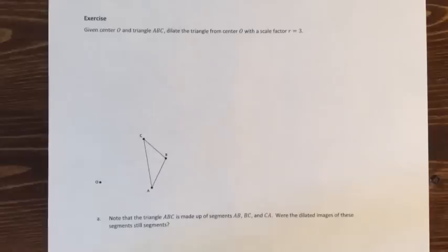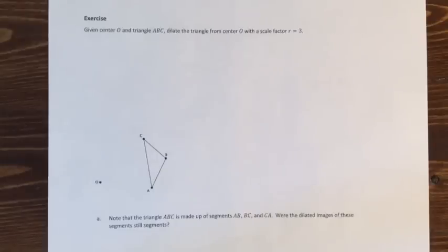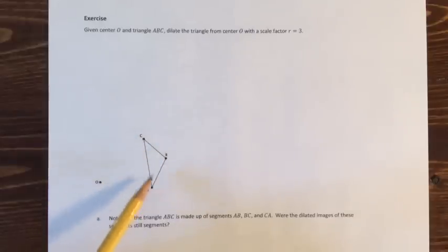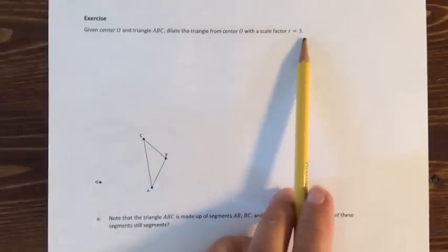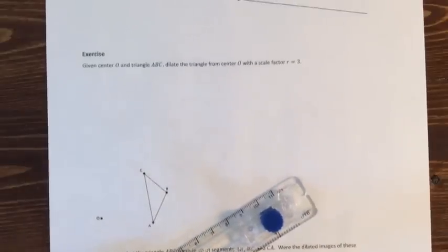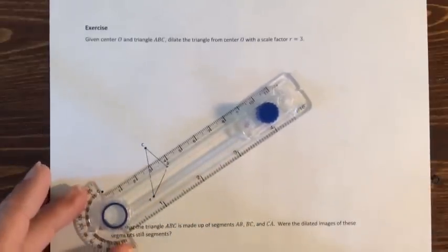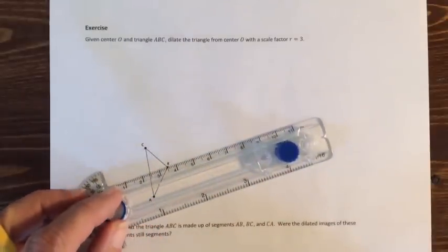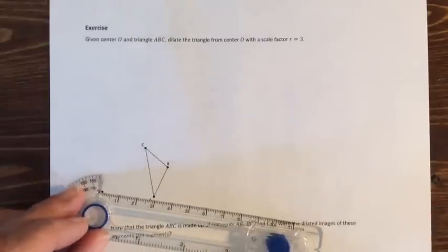Now we're going to look at an exercise. We've dilated lines and rays — now we're going to dilate a triangle, which means we're dilating segments. This triangle is made up of three line segments, and we're going to dilate those by a scale factor of R equals three. We did something very similar on GeoGebra. We're going to use the compass as a ruler and straight edge, measure the distances between points carefully to the tenth of a centimeter, and then dilate by a scale factor of three.